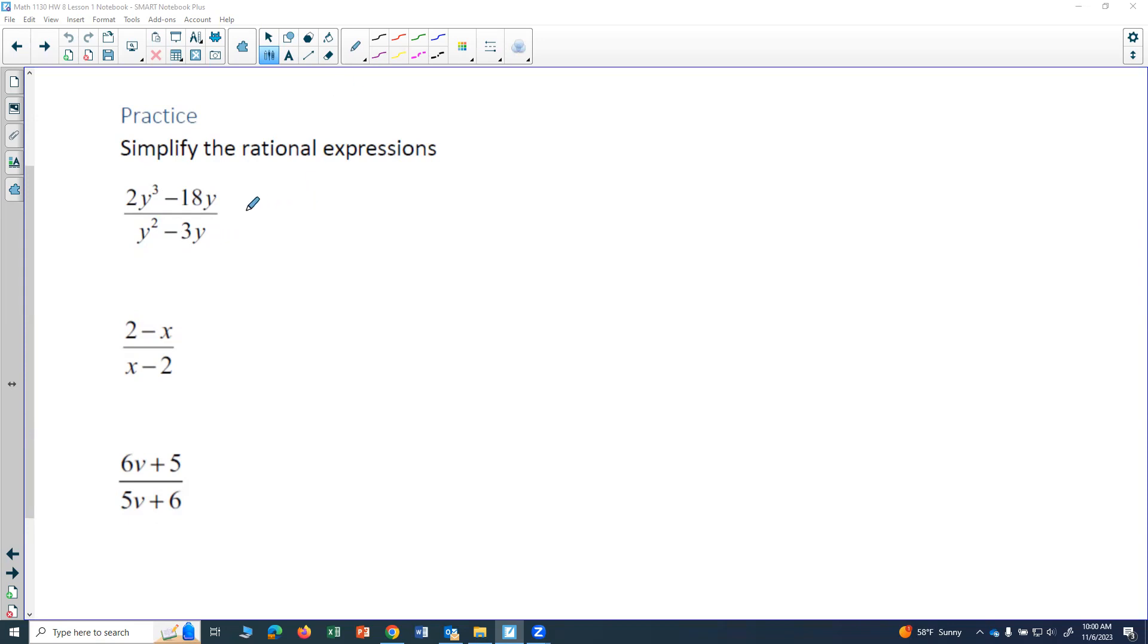So always look for a greatest common factor first. Here I have a 2 and an 18. They're both even, so I know I can pull out a 2. So I'm going to write a 2 out front. And then I always take the variable to the lowest exponent that there is. So in this case, y to the first, or just writing a y, would be the lowest exponent.